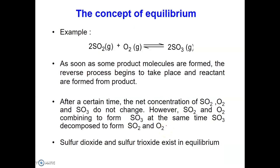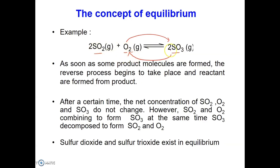For example, SO2 gas reacts with oxygen gas in a reversible reaction to produce SO3 gas. In the beginning of the reaction, we only have reactant species. As soon as some product molecules are formed, the reverse reaction will begin to take place. After a certain time, the net concentration of SO2, O2, and SO3 do not change. However, SO2 and oxygen gas will still combine to form SO3, while SO3 decomposes back to form SO2 and oxygen. At the point where there is no net change in concentrations, we say that sulfur dioxide and SO3 exist in equilibrium.